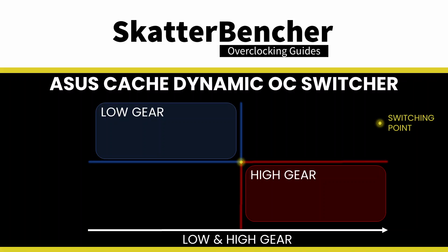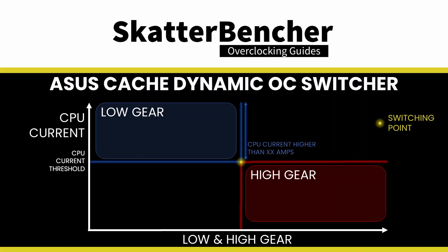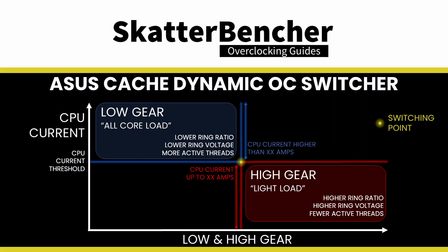The trigger is the CPU current. Anything above the set threshold triggers low gear, and everything below the threshold activates high gear. Practically, low gear represents an all-core load, while high gear represents a light or few-threaded workload.